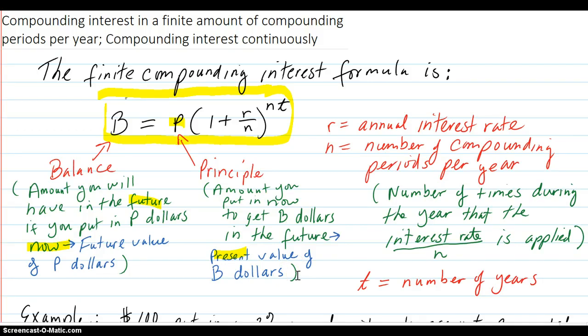And then you have the rest of the formula. You have your 1 plus the interest rate. That's the annual interest rate, r.